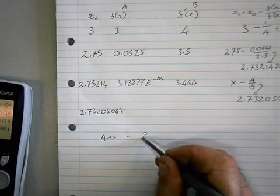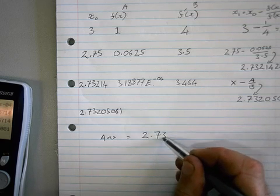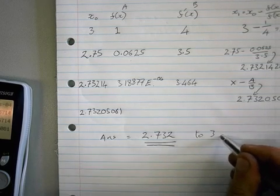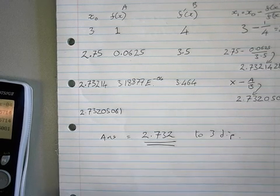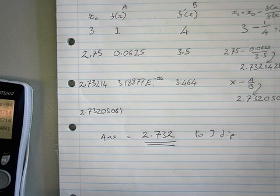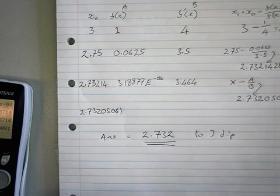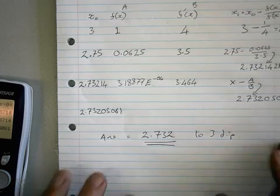So the answer is going to be 2.732, and that's to three decimal places. Now the question might ask you for two decimal places. But the moment you get this big repeat here like this, stop, because you've found it.